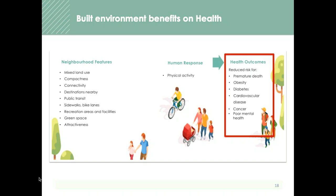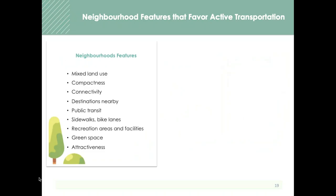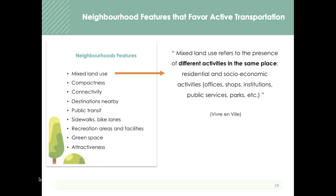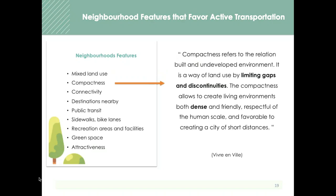Let's briefly define some of these features that favor active transportation. Mixed land use is defined by the presence of different activities or land uses within the same place — residential and socioeconomic activities including offices, shops, institutions, public services, and parks. It helps create a complete living environment where people can live, work, play, go grocery shopping, and meet all of their needs without leaving their neighborhood. Compactness refers to the relationship between the built and undeveloped environment — limiting gaps and discontinuities between the built form to create living environments that are dense and friendly, respectful to the human scale, and favorable to shorter distances of travel.